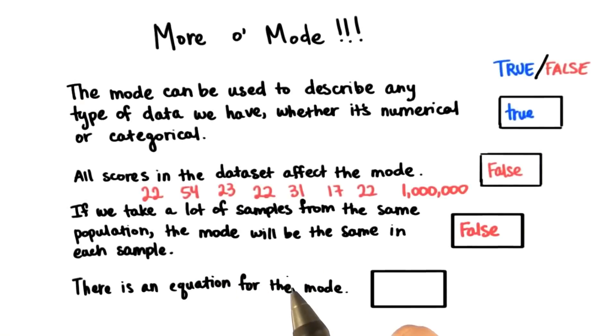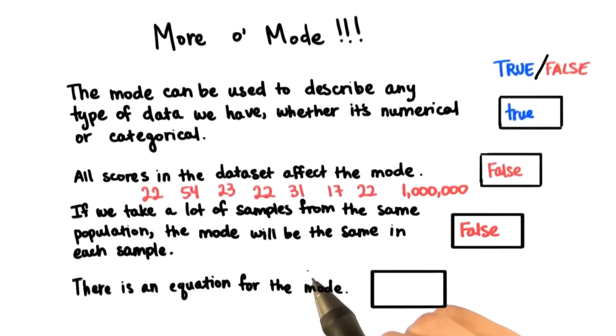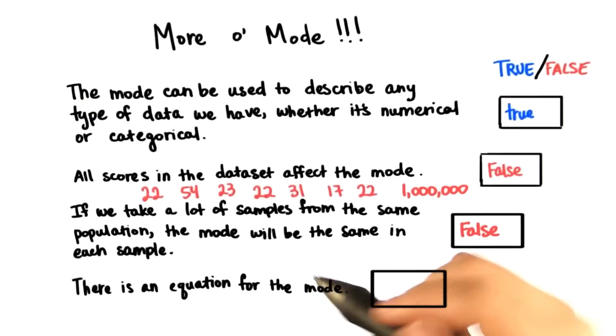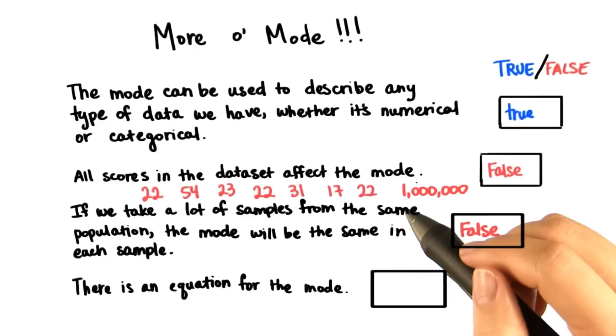Because this third point is false, we can't really use the mode to learn about our population. And this is our goal in this course, inferential statistics.